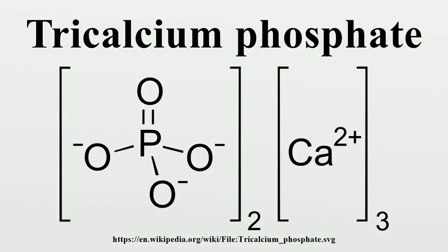Tri-calcium phosphate is a calcium salt of phosphoric acid with the chemical formula Ca3(PO4)2. It is also known as tri-basic calcium phosphate and bone phosphate of lime. Calcium phosphate is one of the main combustion products of bone, and is also commonly derived from inorganic sources such as mineral rock.